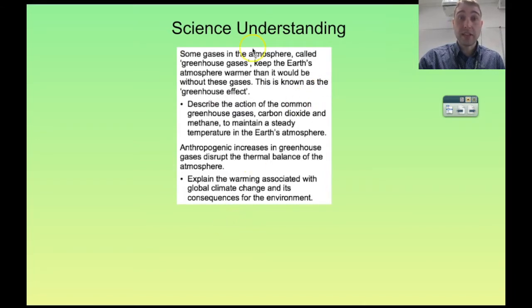The science understandings that you're going to look at are that some gases in the atmosphere called greenhouse gases warm the atmosphere. You need to describe the action of carbon dioxide and methane and how they maintain that steady temperature in the Earth's atmosphere. Then you need to talk about how anthropogenic increases in greenhouse gases disrupt the thermal balance of the atmosphere and the effects on climate change of changing the components of the atmosphere.